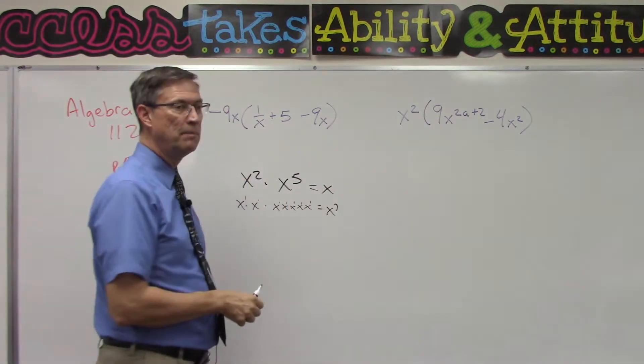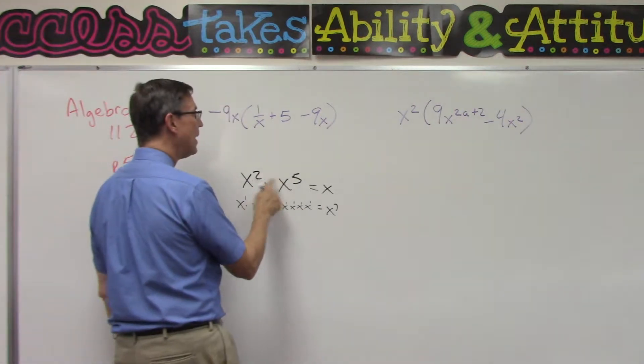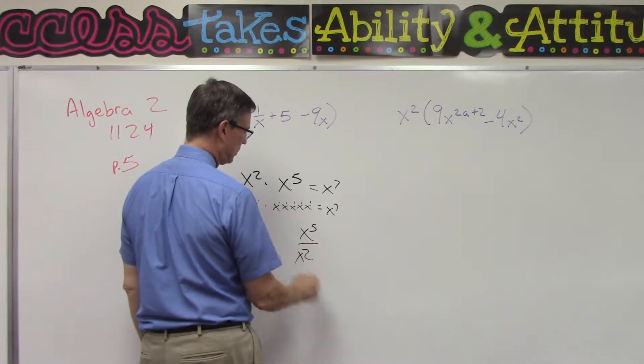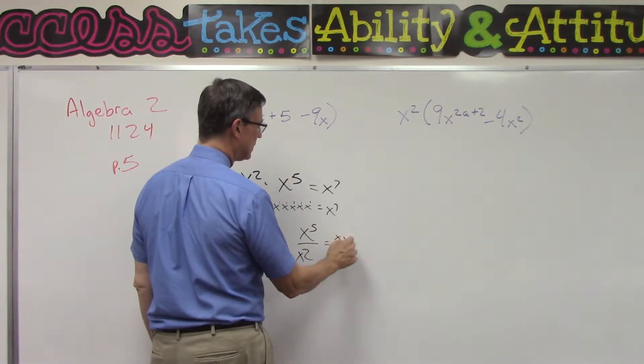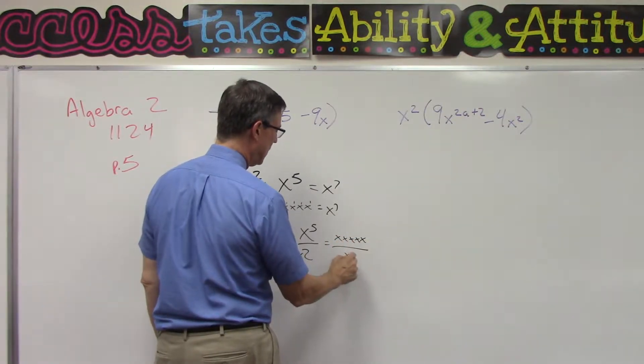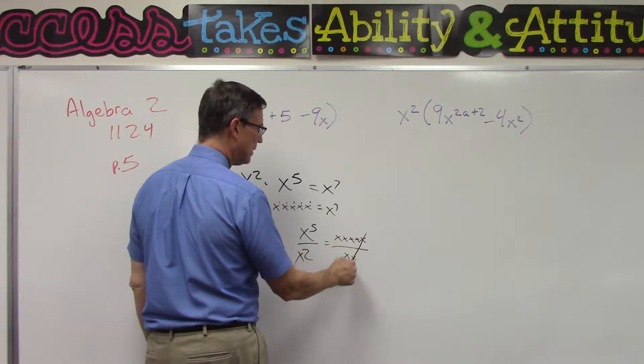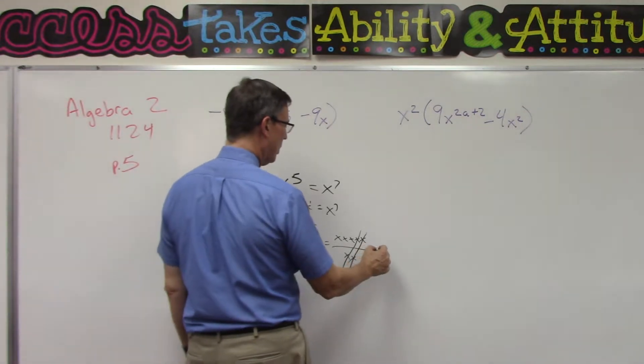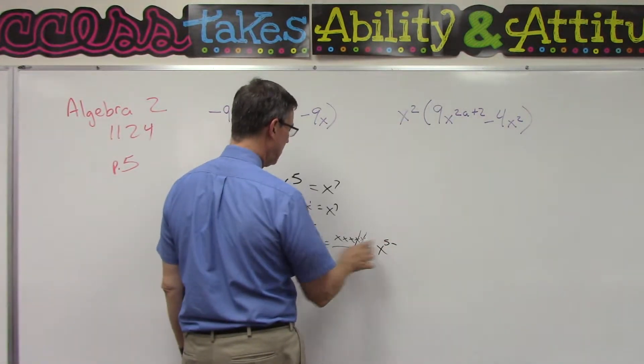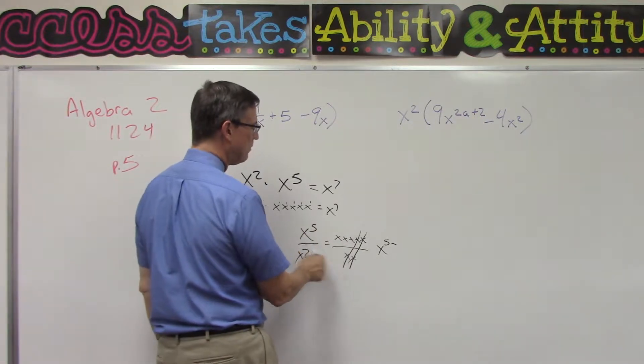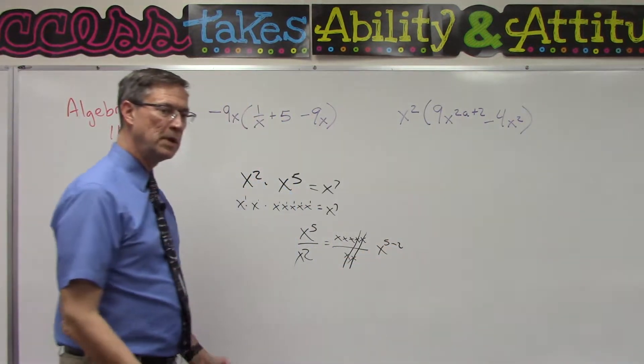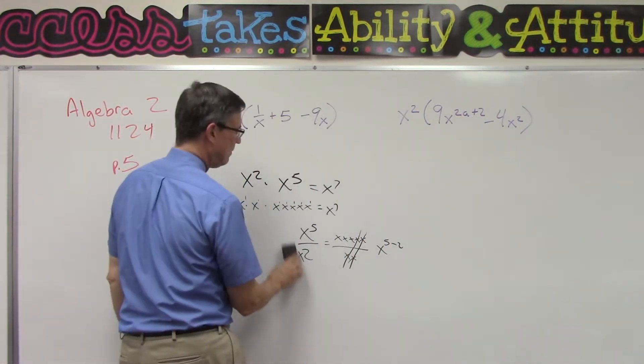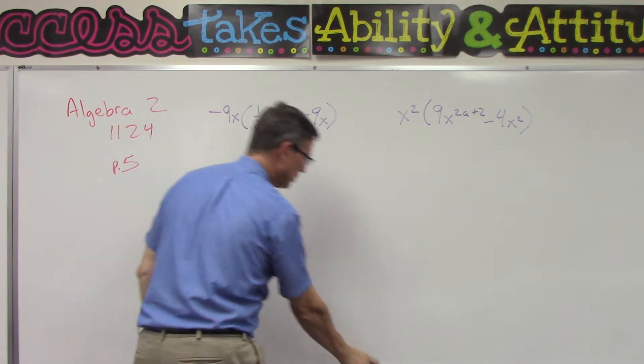Similarly, if I had x to the fifth over x squared, that would be like saying x·x·x·x·x over x·x. Anything divided by itself cancels out, so two of those would cancel out and you would have x to the third. Or we could say a shortcut is to take five and when we're dividing, subtract five minus two. So as long as the base is the same for that variable, you just subtract the exponent. That's review, hopefully you've had that before in Algebra 1 and just a quick reminder why this works.